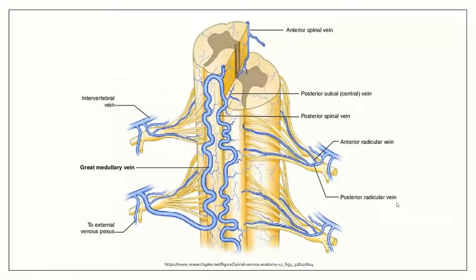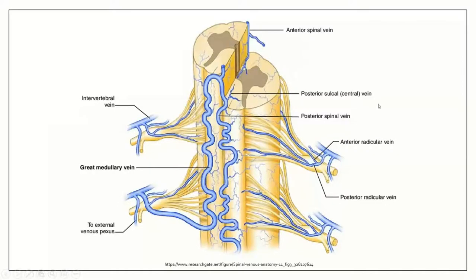We always talk about arteries, but we rarely discuss veins. The image is slightly flipped, but the veins form radial distributions — they exit from the center outward and drain into posterior and anterior radicular veins. From there they drain into the vertebral venous plexus and then into the external venous plexus. It generally follows the pattern: interior, radially outward, gathering at the nerve roots, into the dura, then exiting into the internal and then external vertebral plexus. Slightly challenging anatomy, but we'll discuss it as we go.